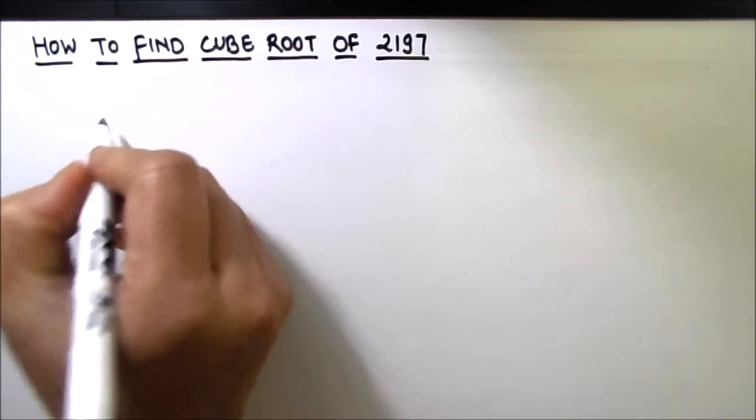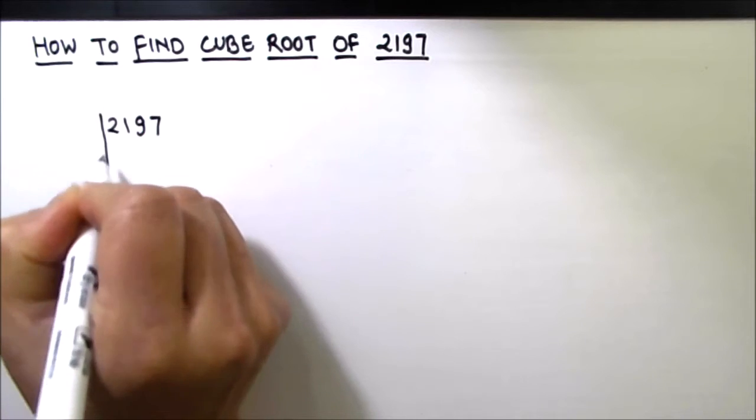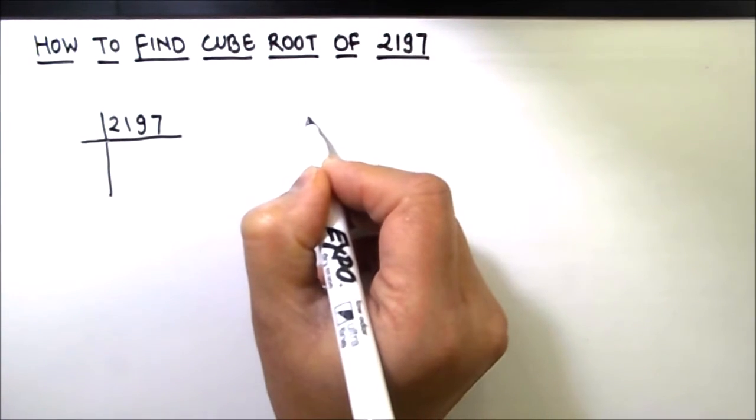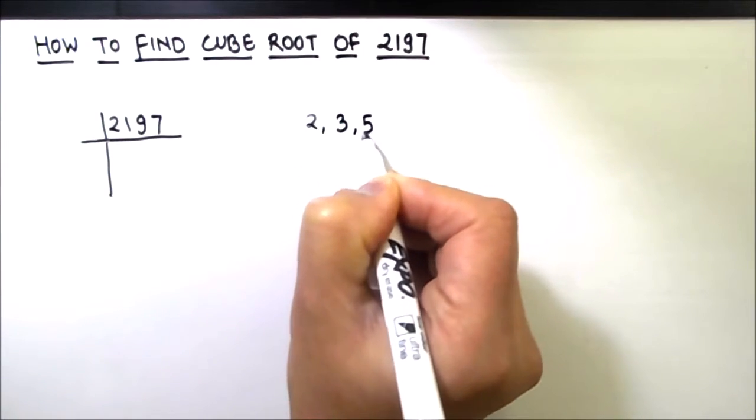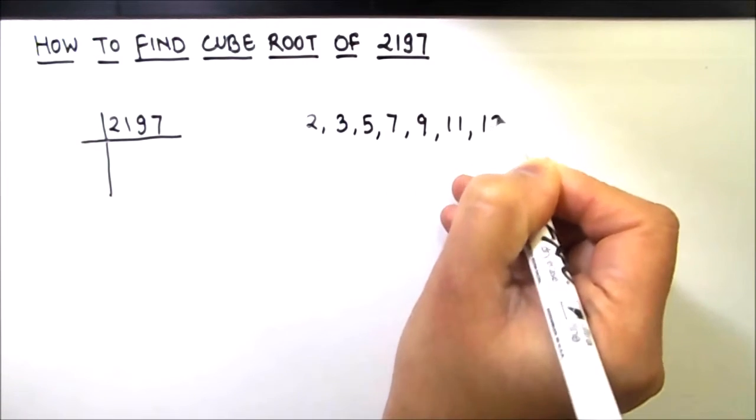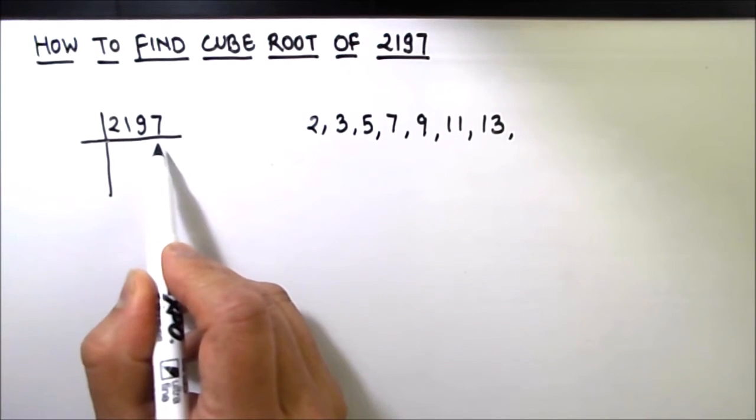So let's divide 2197 and find its prime factors. Let's first write a few prime numbers before starting our prime factorization. So 2, 3, 5, 7, 9, 11, 13 are the first few prime numbers.